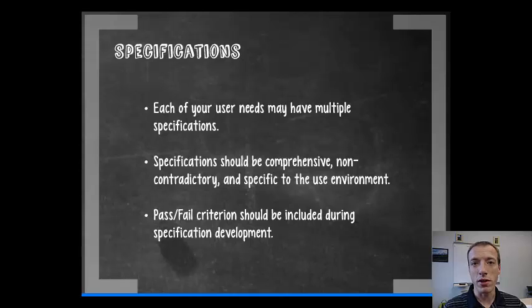So now go back to your user need list. Each of your user needs may have multiple specifications for them, but your specifications should really take those user needs and make them quantitative. So your user needs should be those broad functions of your project, and they may even be self-contradictory. So user needs may say something like it should be low cost and high performance, and these can contradict each other.